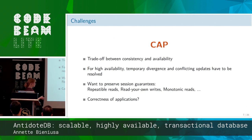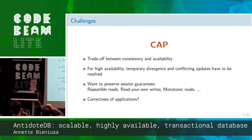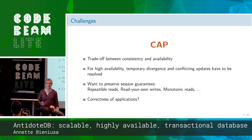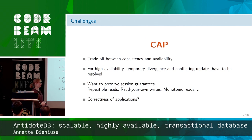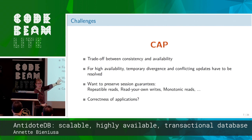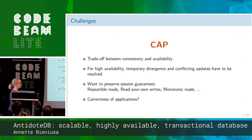For users, what you want to guarantee at a high level are the so-called session guarantees. These include: repeatable reads — if you read tweets once and read them later, they should not magically disappear; read your own writes — once you do an update, you expect it to be there; and monotonic reads — you want to see more and more updates but not go back in history. It turns out that when building these systems, people often take these for granted, but some databases don't provide them.